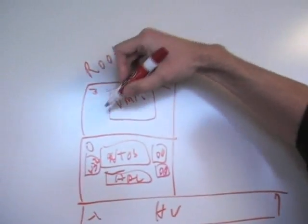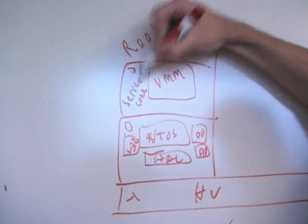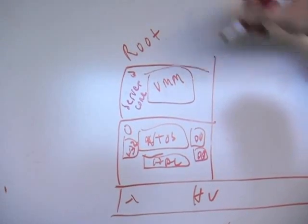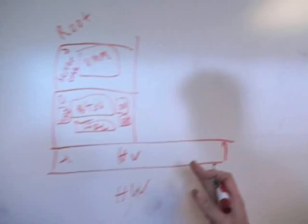And this root partition, this would be typically would be server core running the virtualization role. And this root partition basically has control of the machine.